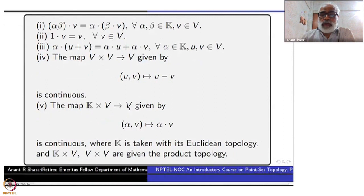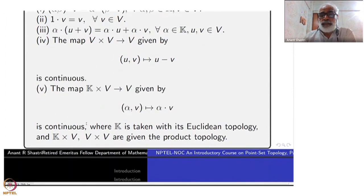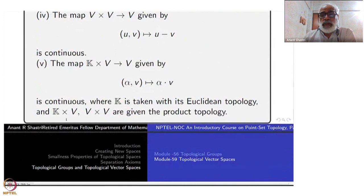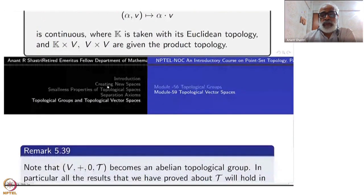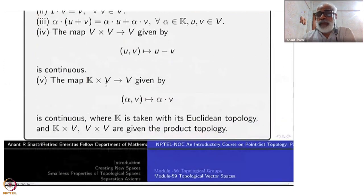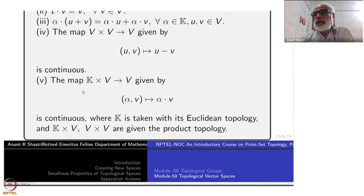The topology on k is the standard Euclidean topology. k × V and V × V are given the product topology, and under that topology these maps must be continuous. For those who already know what a vector space is — scalar multiplication and addition are continuous — that is the easy way to remember: it's a topological vector space, a vector space in which there is a topology with respect to which the algebraic operations are continuous.